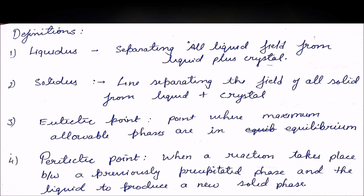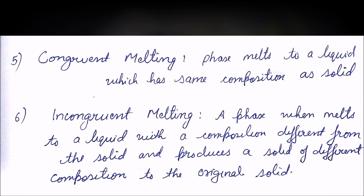The eutectic point is a point where the maximum allowable phases are in equilibrium with each other. If there are three phases in a system's phase diagram, all three will coexist at the eutectic point. The peritectic point is where a reaction takes place between a previously formed mineral and the liquid present at that point, reacting to form a new solid phase.